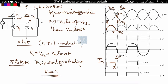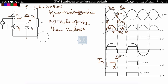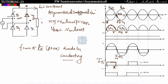At omega t equal to pi plus alpha, thyristor T4 is triggered. T4 and D3 start conducting from pi plus alpha to 2pi. So to summarize: T1 and D2 conduct from alpha to pi; D2 and D3 freewheel from pi to pi plus alpha; T4 and D3 conduct from pi plus alpha to 2pi. From the thyristor current waveform, the thyristor conducts from alpha to pi. For diode D3, it starts conducting from pi, continuing through the freewheeling interval and then with T4.